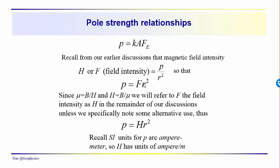In basic physics, we know that magnetic permeability is the ratio of B over H, and H is equal to B over mu. Remember, mu in CGS units is just equal to one. So we're going to refer to magnetic field intensity F as H in the remainder of our discussions, unless we specifically note otherwise. F sub B will be traditionally used for the intensity of the Earth's magnetic field. We'll use H, which you may be more familiar with from your basic physics.